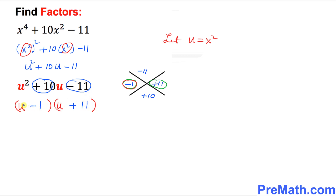Put down two parentheses to factor this trinomial. Since we are dealing with the u variable, put u in each parenthesis. Our factors are negative 1 and positive 11, giving us (u - 1)(u + 11). Now we know that u equals x squared, so replacing u gives us (x² - 1)(x² + 11).